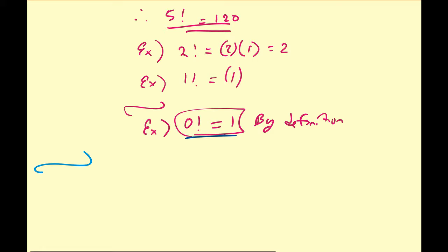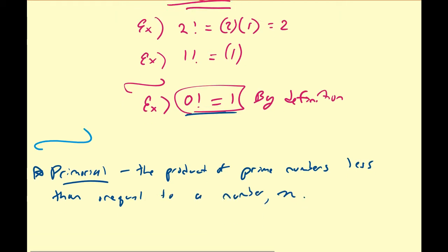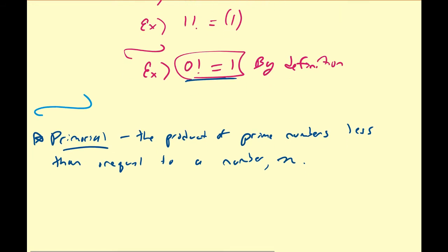That brings us to the main point of this video: what is a primorial? A primorial has a very similar definition to the factorial. It is the product of prime numbers less than or equal to a given number n, and it is denoted via n with a pound sign next to it — so this is called n primorial.